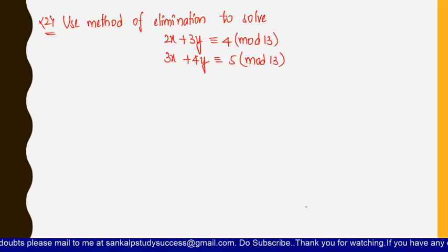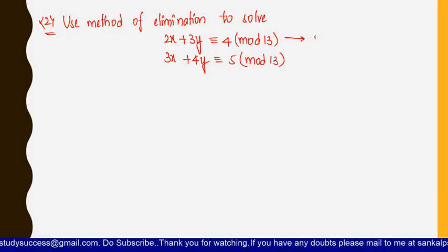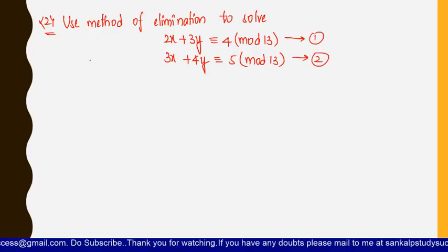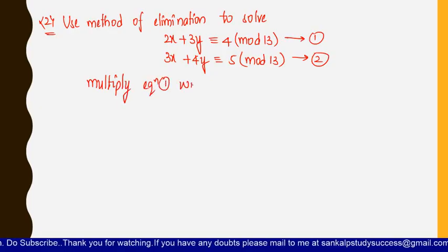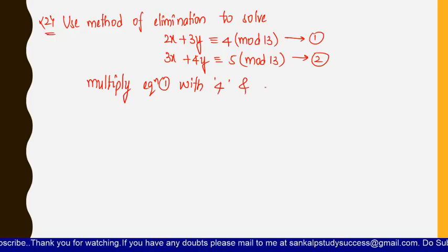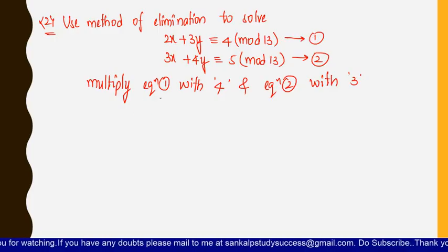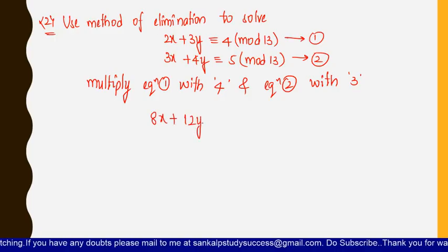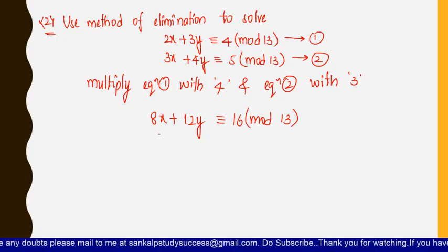Now let us see one more problem of a different model — using the elimination method to solve two equations. To eliminate y, consider the first equation as Equation 1 and the second as Equation 2. To eliminate y, multiply Equation 1 by 4 and Equation 2 by 3. Multiplying Equation 1 by 4 gives 8x + 12y ≡ 16 (mod 13), and multiplying Equation 2 by 3 gives 9x + 12y ≡ 15 (mod 13).